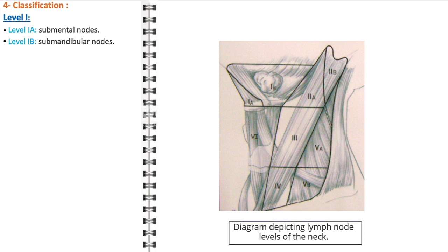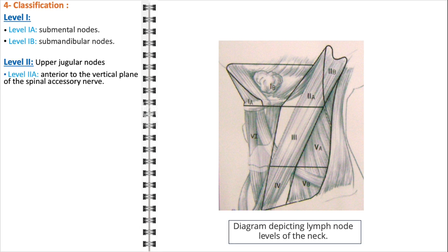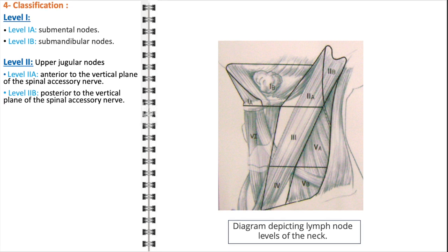Level 1b refers to the submandibular nodes, situated beneath the jaw, tasked with draining regions such as the cheeks, upper lip, the body of the tongue, and the anterior nasal cavity. Level 2, the upper jugular nodes, is further divided into level 2a, where nodes are anterior to the vertical plane of the spinal accessory nerve and primarily drain the oropharynx and oral cavity, and level 2b, located posterior to this plane, often involving drainage from the nasopharynx and soft palate.